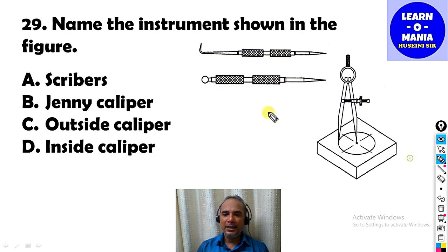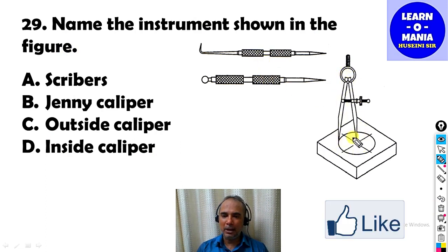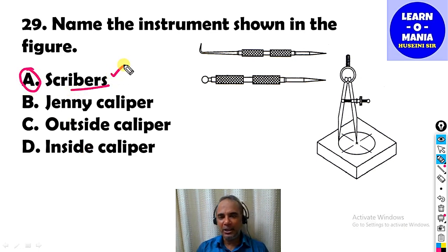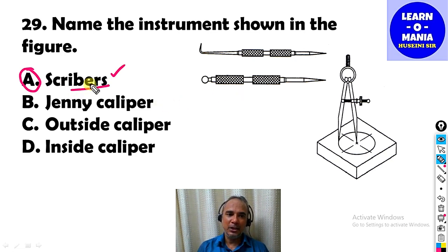Next MCQ: Name the instrument shown in the figure. The instrument shown is used for marking on a metal surface. The answer is scriber — a scriber is a pointed instrument used for marking and measuring on metallic surfaces.